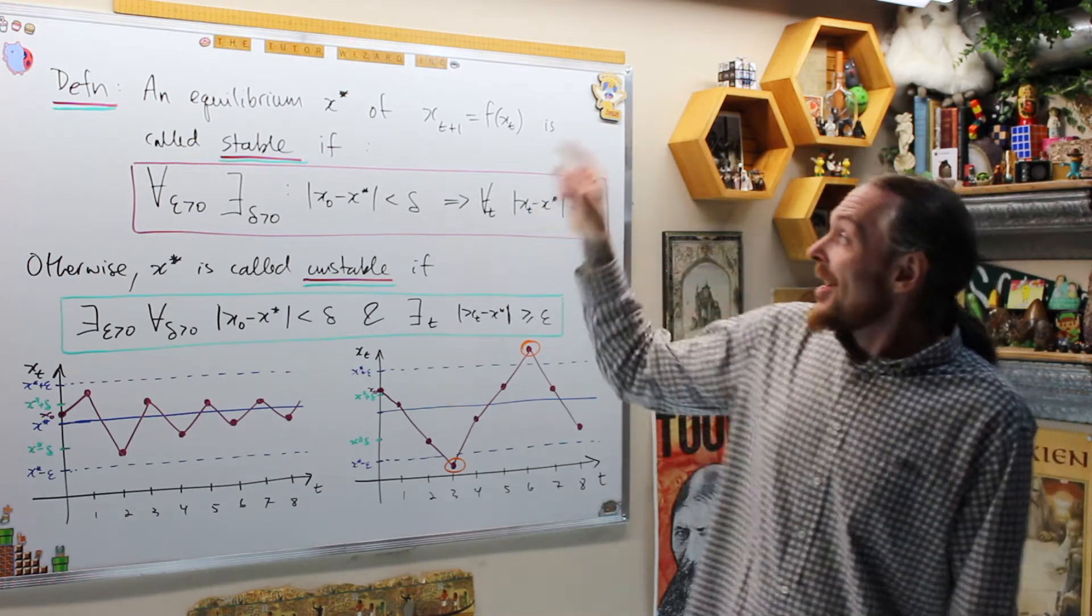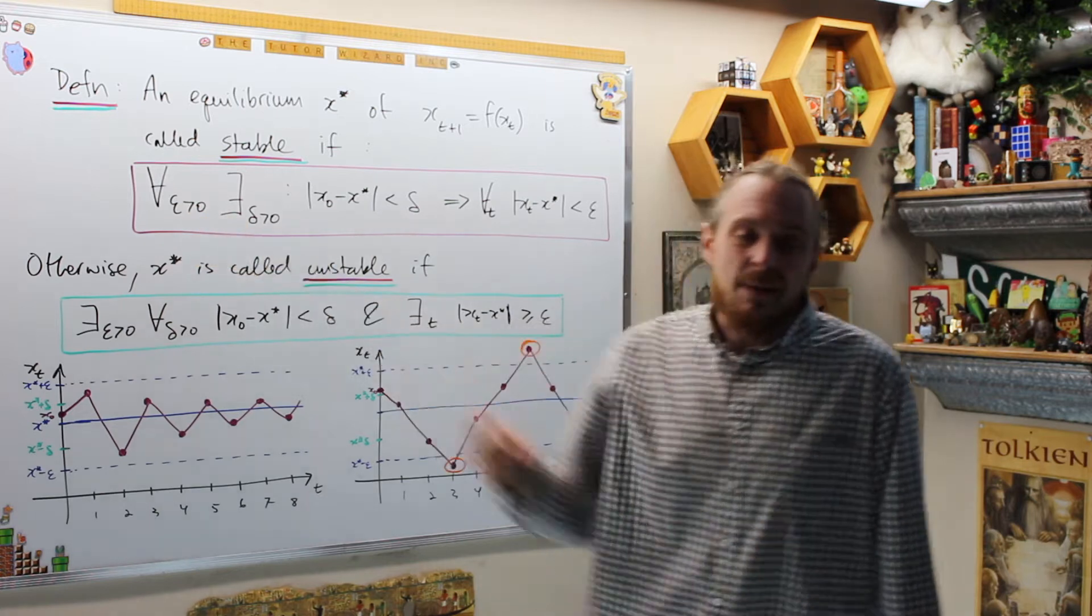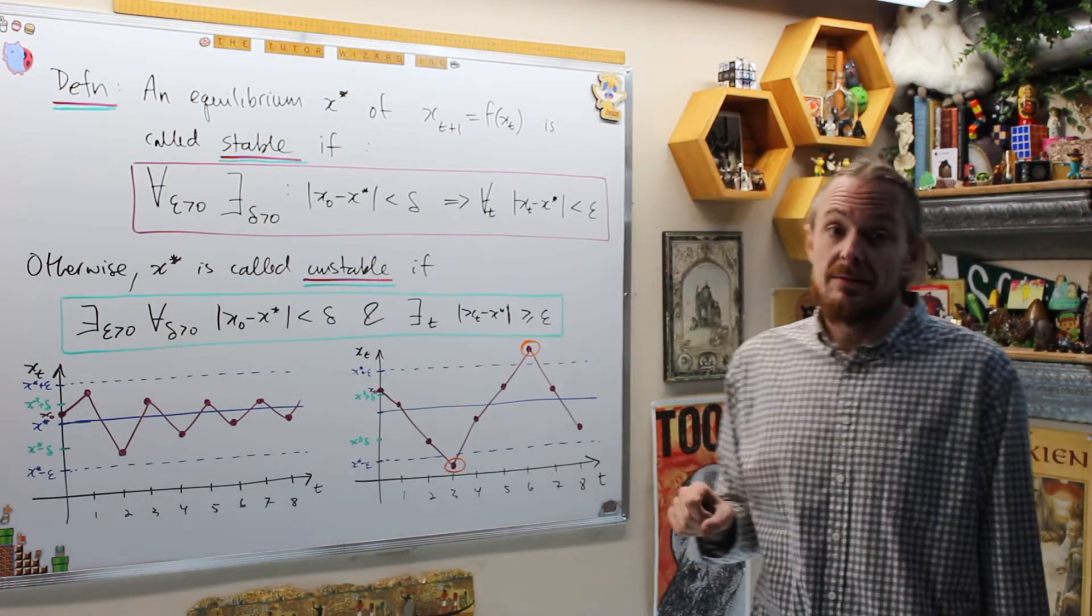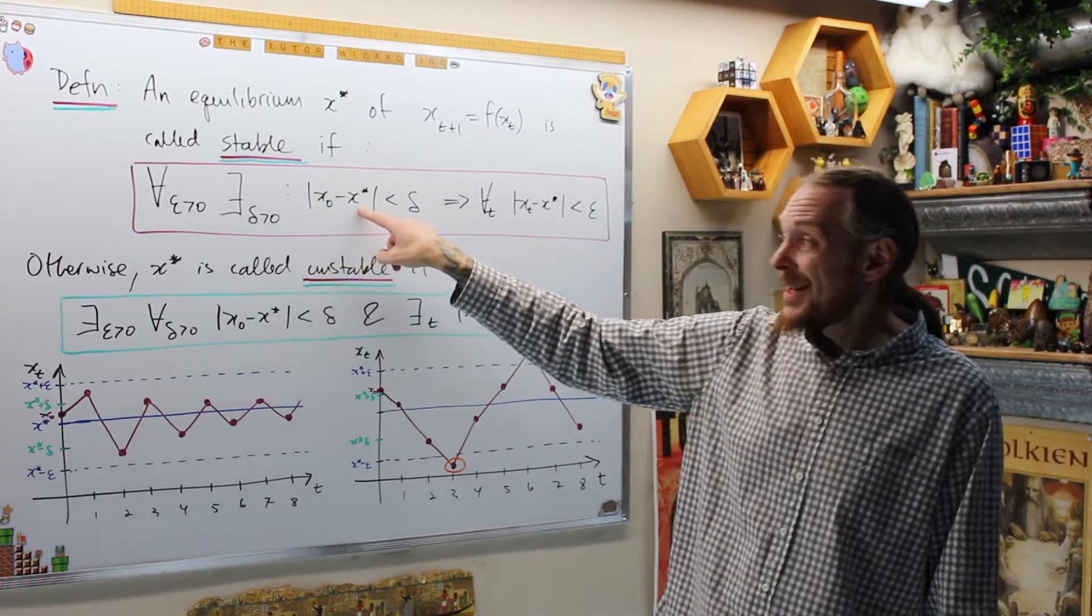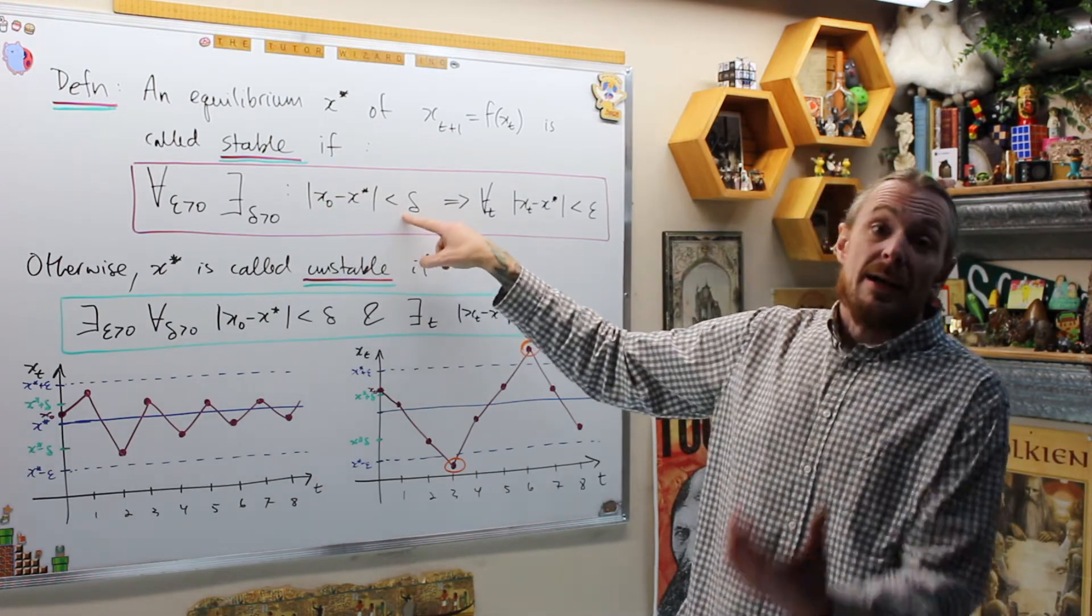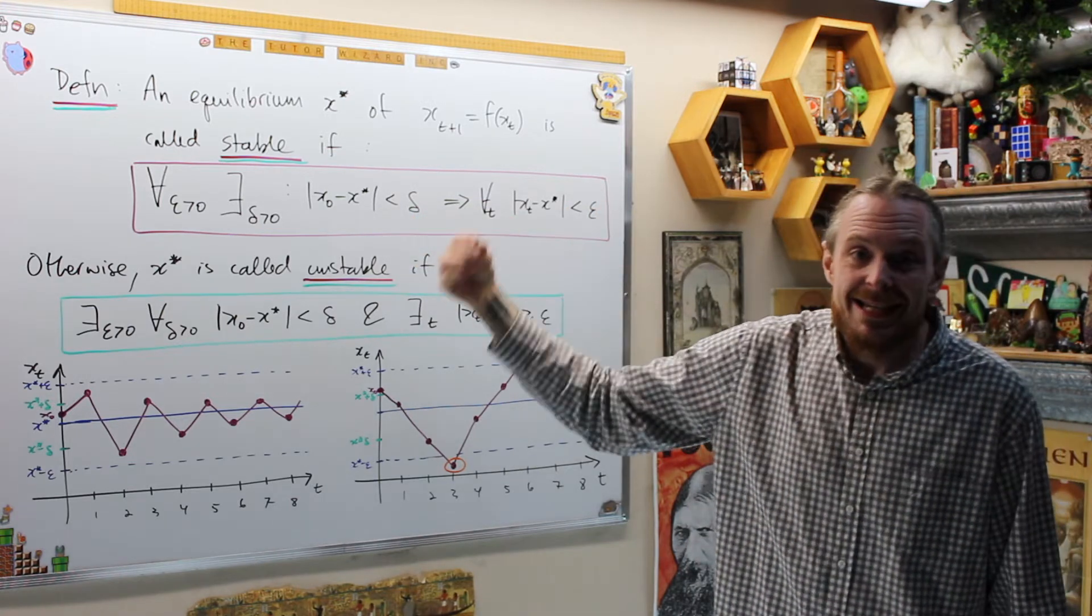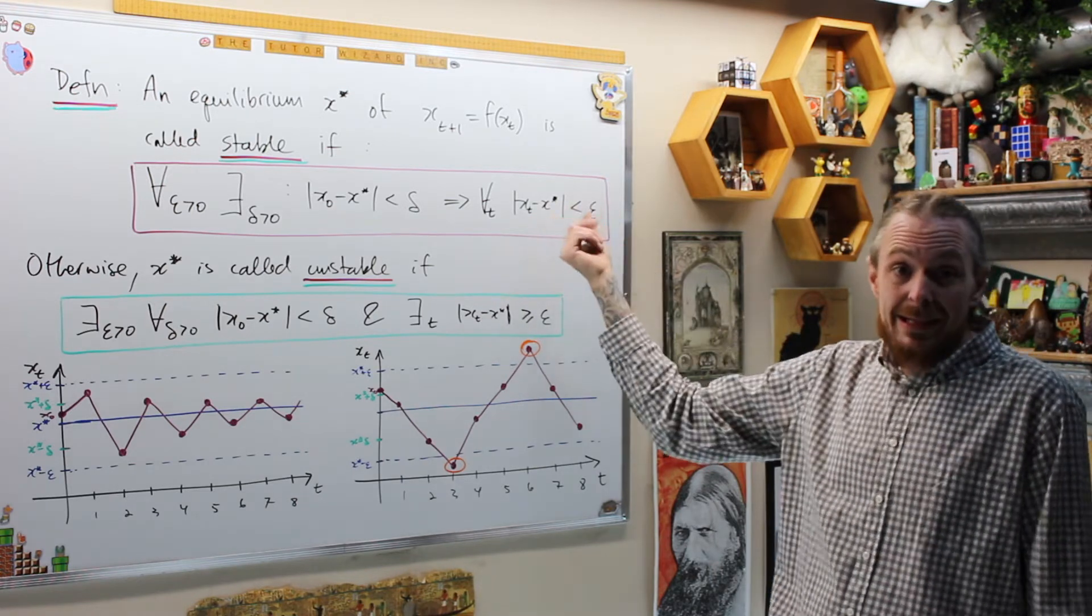What that tells us is an equilibrium is stable if for every real number epsilon greater than zero, there exists some other delta greater than zero, such that as long as I can get the distance between my starting point x_0 and that equilibrium be within distance of delta, then for all time t, the x_t values and the equilibrium are going to be less than epsilon.